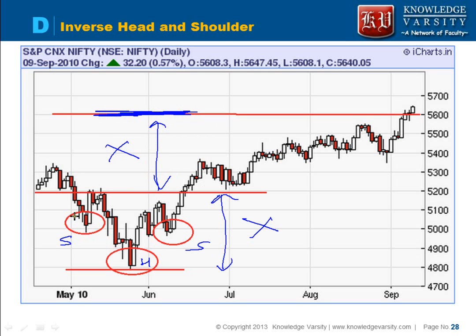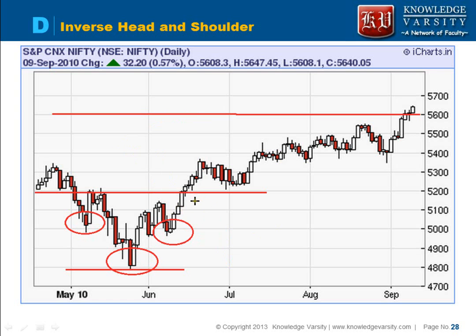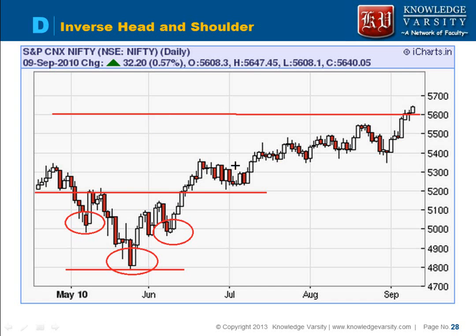Please note that volume plays a very important role in head and shoulders. What happens is the neckline, which is broken, has to be broken by a very high volume; otherwise it may be a fake breakout. This neckline is now acting as a resistance. It has to break with high volume, and after breaking, it will achieve the target point. This is your inverse head and shoulder.